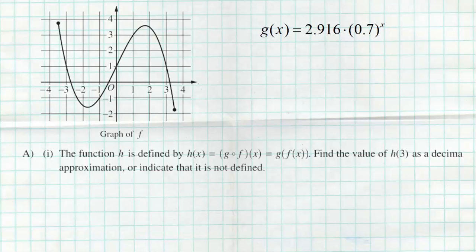The first question, part A part one, says the function h is defined as h of x equals g composed of f, meaning we're going to take f, plug it into g. Find the value of h of 3 as a decimal approximation or indicate that it is not defined. This is really simple. All we got to do is take 3, first plug it into f, which we can see from the graph we're going to get an output of 1. Then we're going to take that 1 and plug it into g.